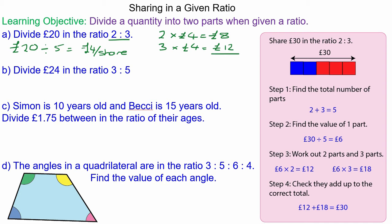So £24 now divided into a total of eight shares gives a value of £3 per share. So you'll have three lots of £3 which is £9, and five lots of £3 which is £15. And again they add to make the total amount which is £24.